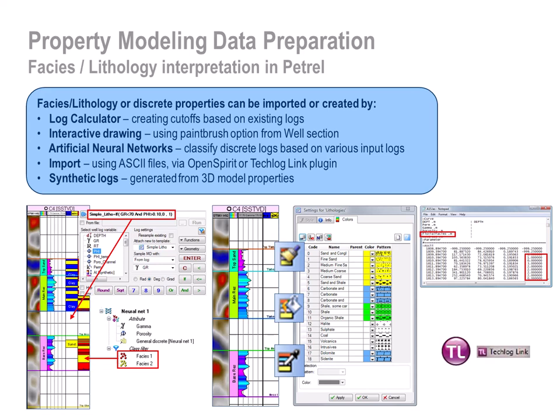The discrete logs can be imported from other databases or they can be created by using the train estimation model process, neural network classification method. Interactive interpretation in a well section: display the well logs that give information about the facies and then draw the different facies in the correct position in a separate track.